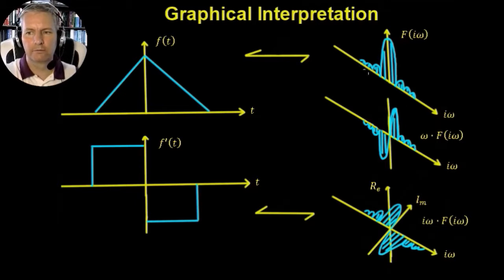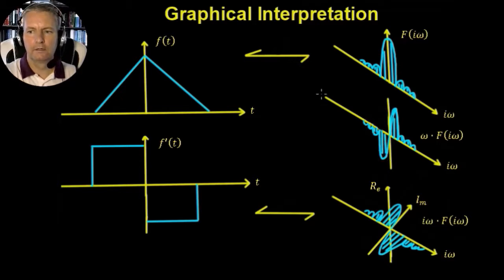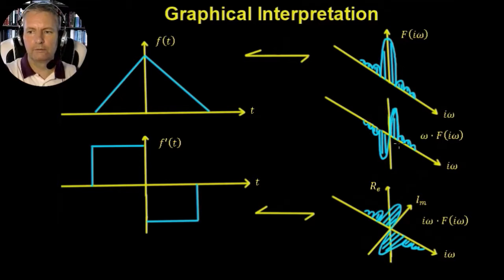Let's multiply the frequency-domain function by ω first. Since ω is just the value along the frequency axis, as ω tends toward zero the whole thing tends to zero, and it raises up away from zero accordingly. The other side is multiplied by minus ω. We then multiply by i, which is equivalent to a rotation of 90 degrees — rotating from the purely real axis onto the purely imaginary axis, with each side rotating in opposite directions. If everything works out, when we Fourier transform the square pulse, it should give us this rotated imaginary function. Let's verify that in MATLAB.